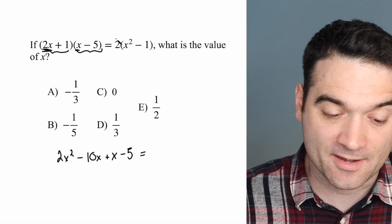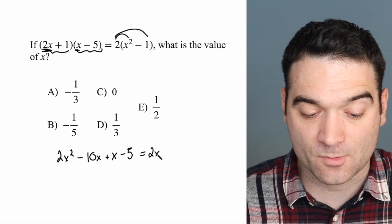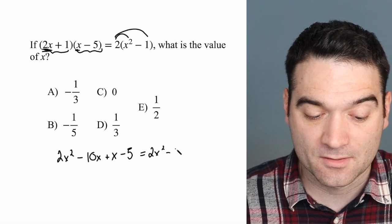And we'll set that equal to the left side. I'm just going to distribute this in right here. So that's 2 times x squared, or 2x squared, minus 2.